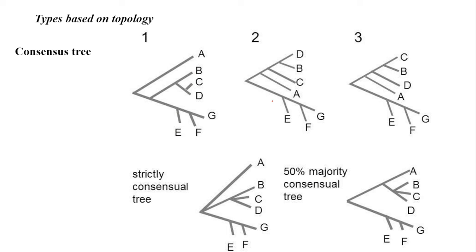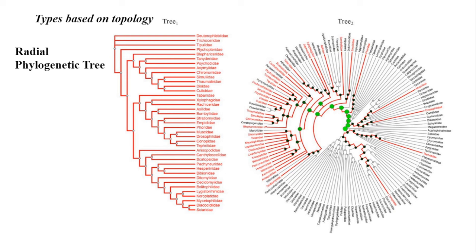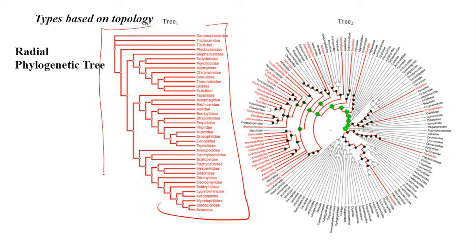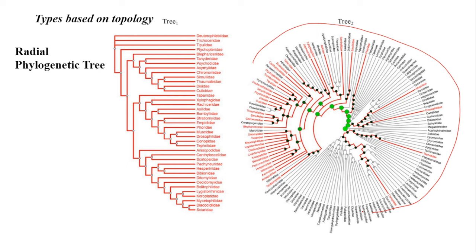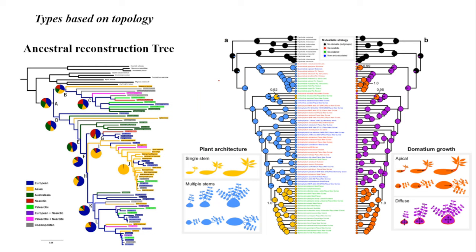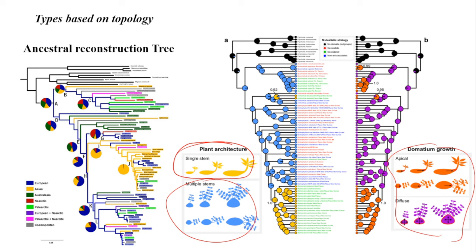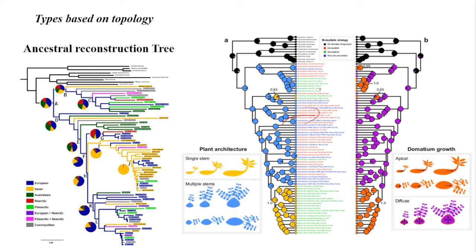A radial phylogenetic tree represents the normal phylogenetic tree in a radial manner, where clades and branches are shown in concentric circles. The common ancestor is at the center, and evolution started there. It represents in a beautiful radial fashion so we can easily give the relation between species. The ancestral reconstruction tree uses phenotypic, genotypic, and other parameters to dig back to the common ancestor which previously existed.